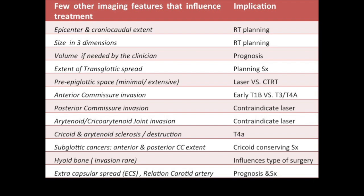Transglottic spread of the disease also helps in planning surgery. Pre-epiglottic space invasion — minimal versus extensive — has implications for laser surgery versus chemoradiotherapy. Anterior commissure invasion is a notorious disease that can lead to early involvement of the thyroid cartilage; even though they appear T1 on imaging, they may actually be T3 or T4 on the actual invasion pattern.